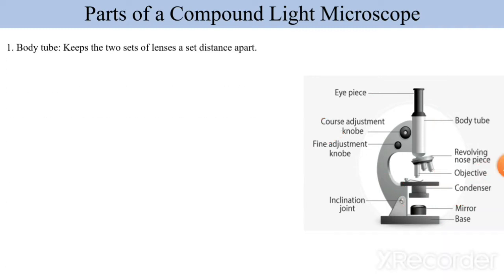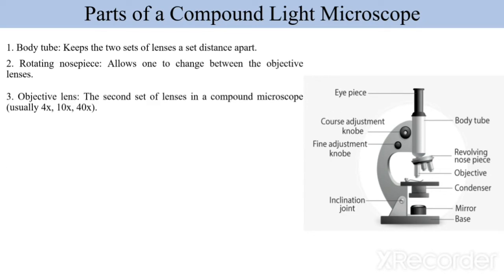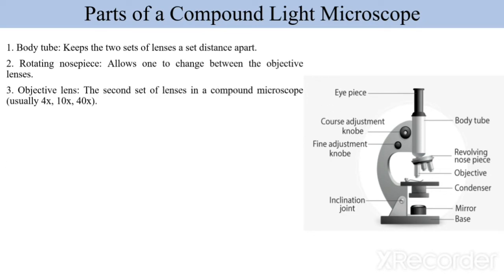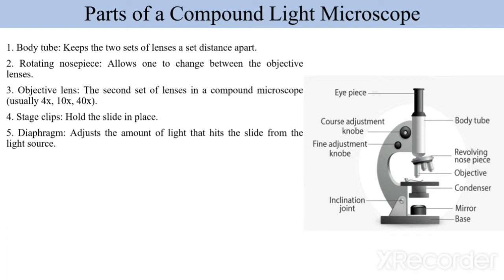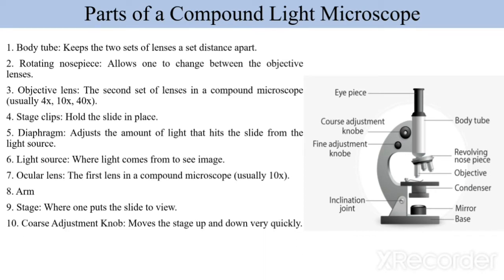The rotating nosepiece allows one to change between the objective lenses. The objective lenses — the second set of lenses in the compound microscope — are 4x, 10x, and 40x. The stage clip holds the slide in place. The diaphragm adjusts the amount of light that hits the slide from the light source, which is mostly sunlight. The ocular lens is the first lens in the compound microscope at 10x. The arm and stage are also present. The coarse adjustment knob moves the stage up and down quickly, while the fine adjustment knob moves it slowly. The base provides support.